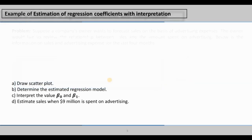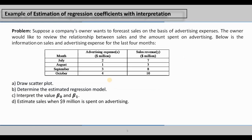Let's start with an example. Suppose a company's owner wants to forecast sales on the basis of advertising expenses. The owner would like to review the relationship between sales and the amount spent on advertising. Below is the information on sales and advertising expenses for the last four months.